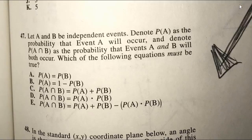Okay, number 47. Let A and B be independent events. Denote P(A) as the probability that Event A will occur, and denote P(A ∩ B) as the probability that Events A and B will both occur. Which of the following equations must be true?